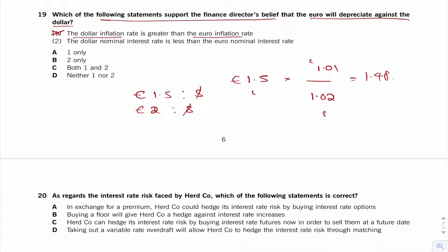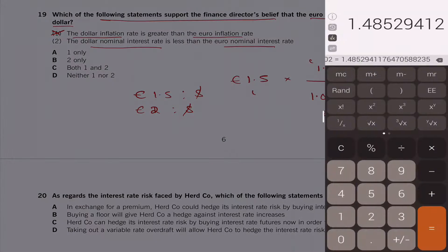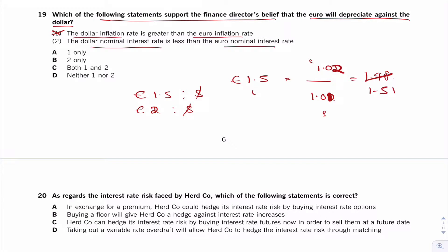What about if the dollar interest rate is less than the Euro interest rate? It's changing it around. This time the interest rate would be like that, and therefore this would be a bigger figure. 1.5 times 1.02 divided by 1.01. I've just made those figures up. 1.51. Yes, it's getting bigger, and therefore it is depreciating.